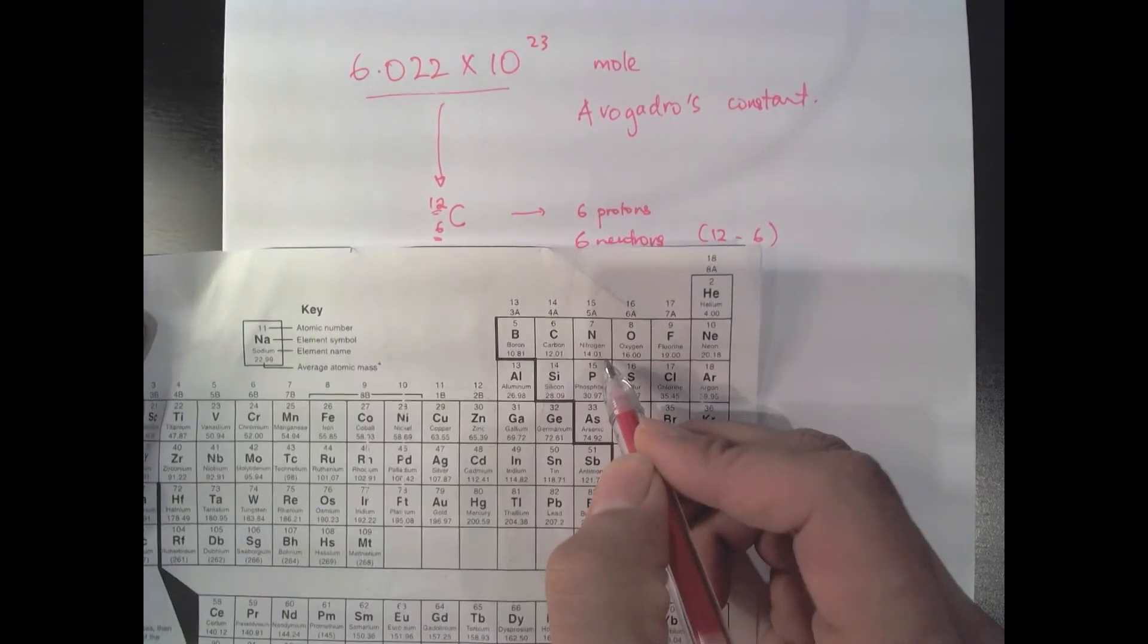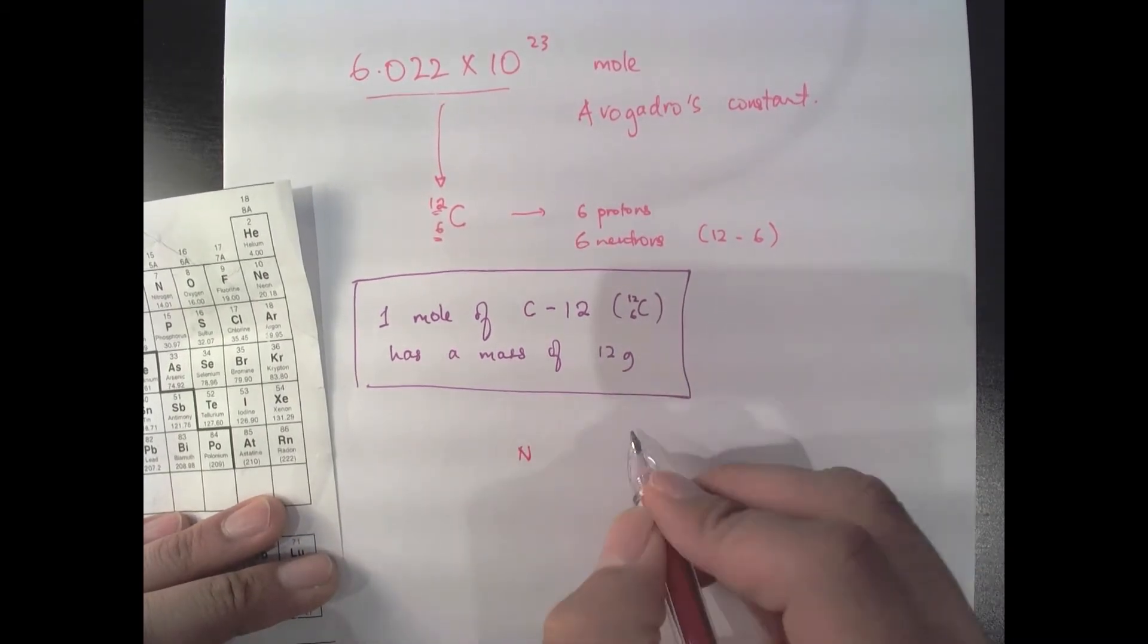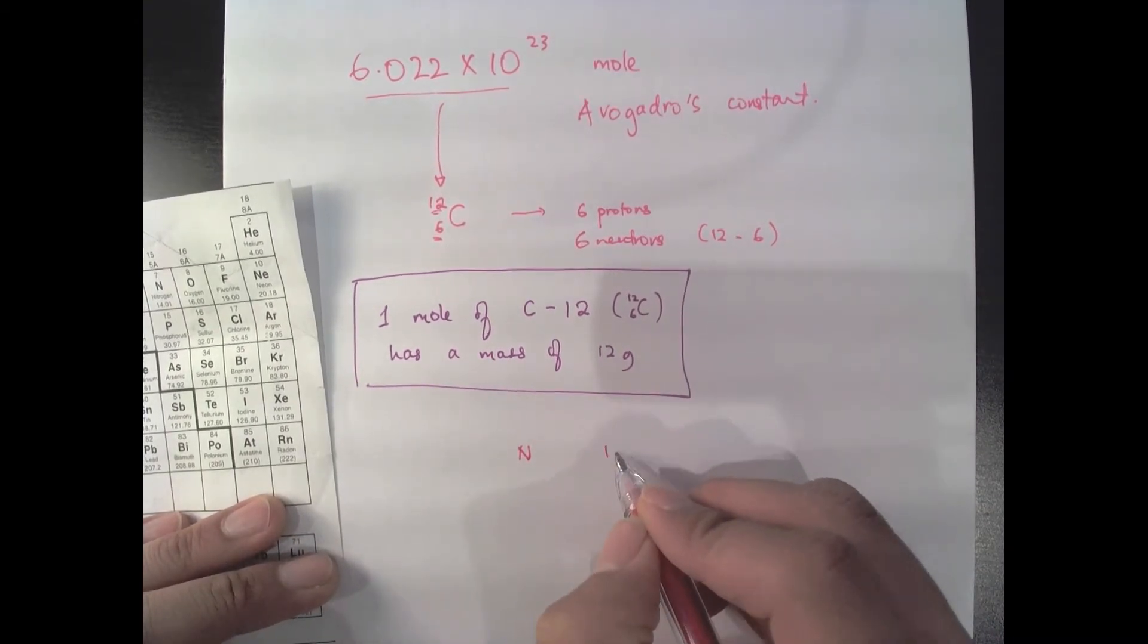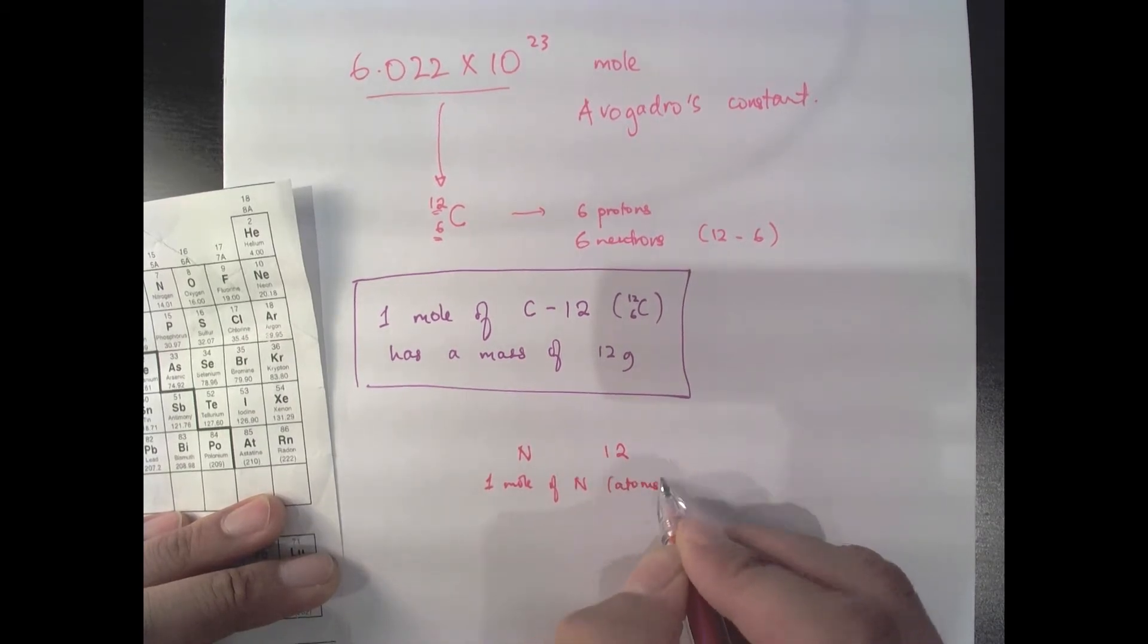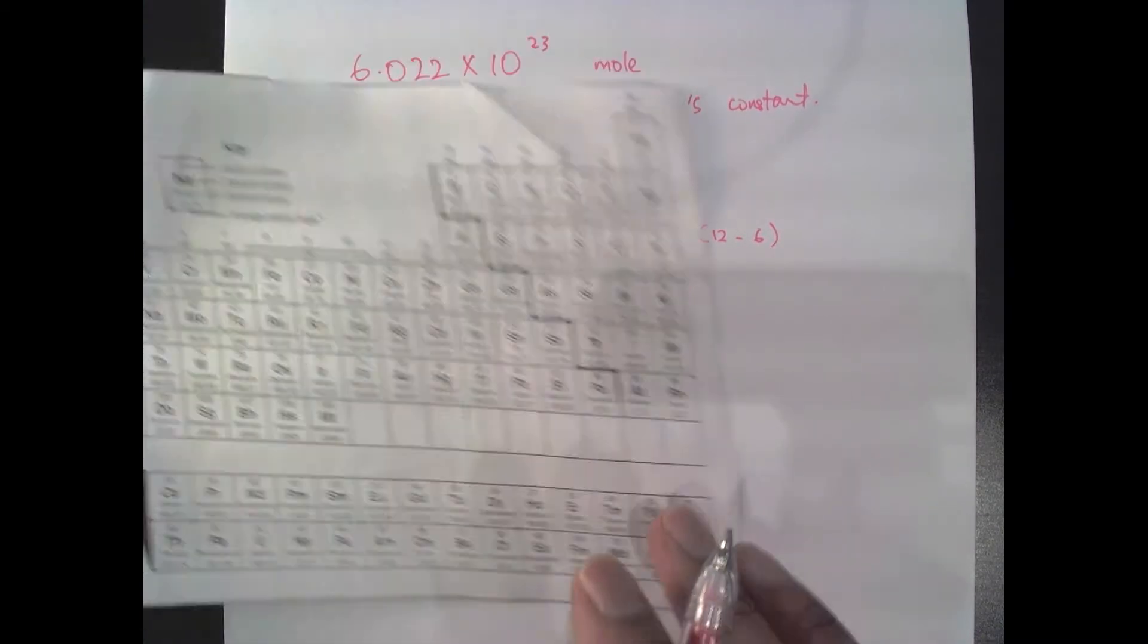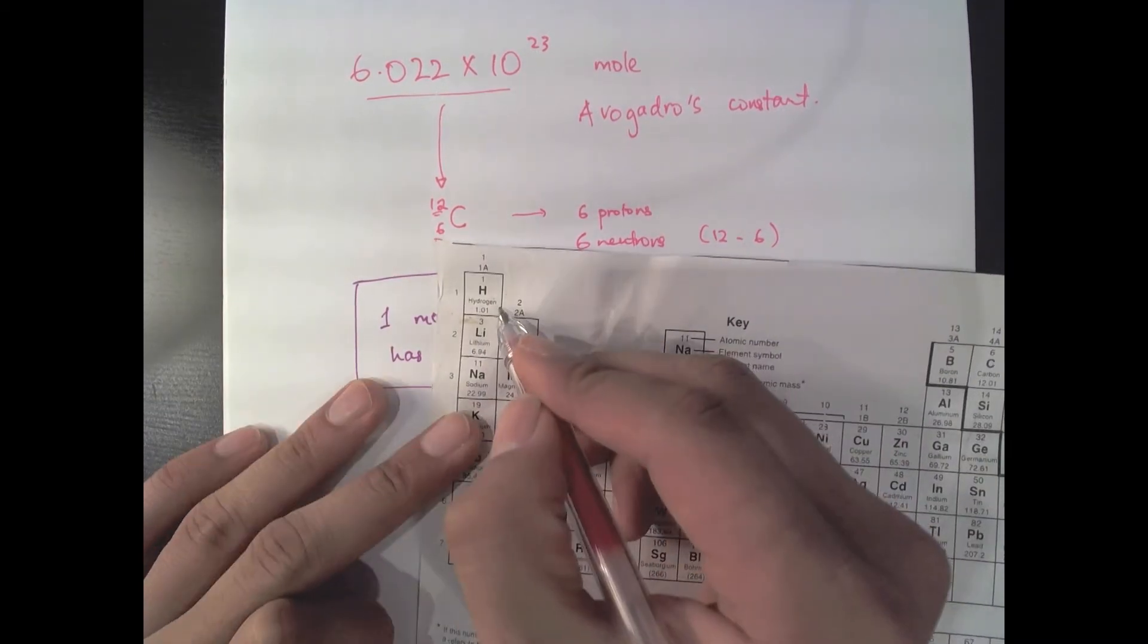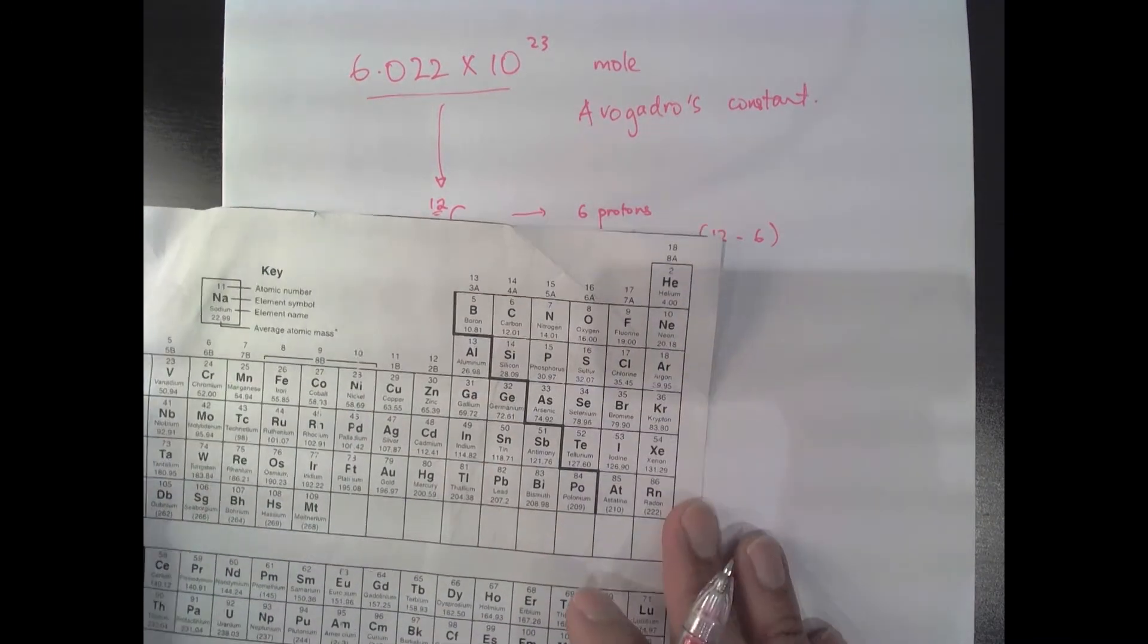So if I look at nitrogen, a mole of nitrogen weighs 14 grams, so that's really convenient. So nitrogen has an atomic mass of 14. What this means is that one mole of nitrogen atoms has a mass of 14 grams. And likewise, I can say the same thing for hydrogen over here. Every mole of hydrogen has a mass of 1 gram.